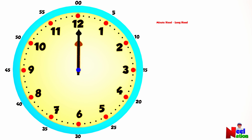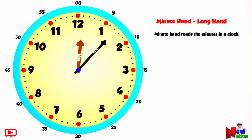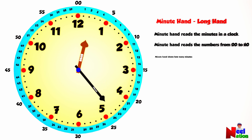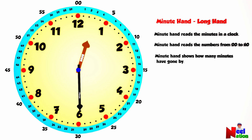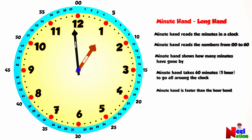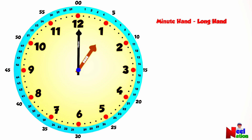Now let's look at the minute hand. The minute hand reads the minutes in the clock, reading numbers from 0 to 60, and shows how many minutes have gone by. The minute hand takes 60 minutes — that is 1 hour — to go around the clock. The minute hand is faster than the hour hand. When the minute hand points at 12, we say o'clock.